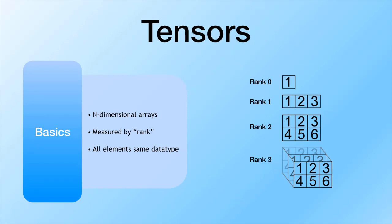You can think of tensors as n-dimensional arrays. If you're already familiar with NumPy, that's probably pretty intuitive. One key difference is that they're measured by rank, which describes their dimensionality. A rank-zero tensor is a single scalar value; rank one is a one-dimensional vector; rank two is a two-dimensional matrix; and rank three you can think of as a stack of two-dimensional matrices — it's three-dimensional.